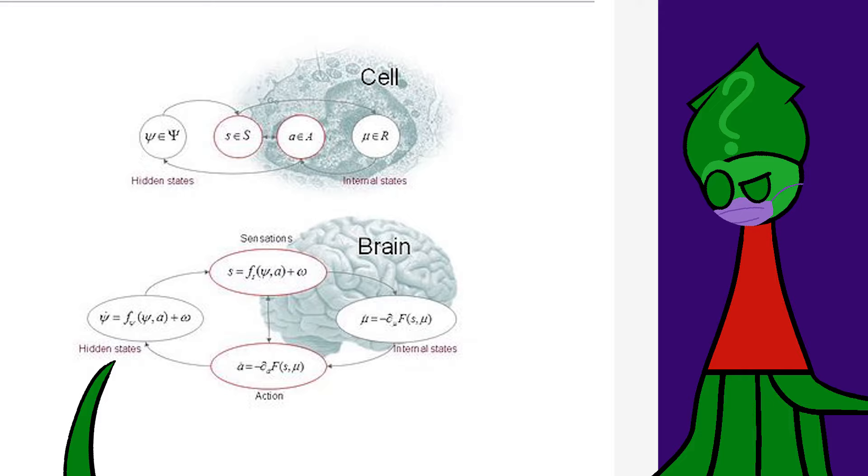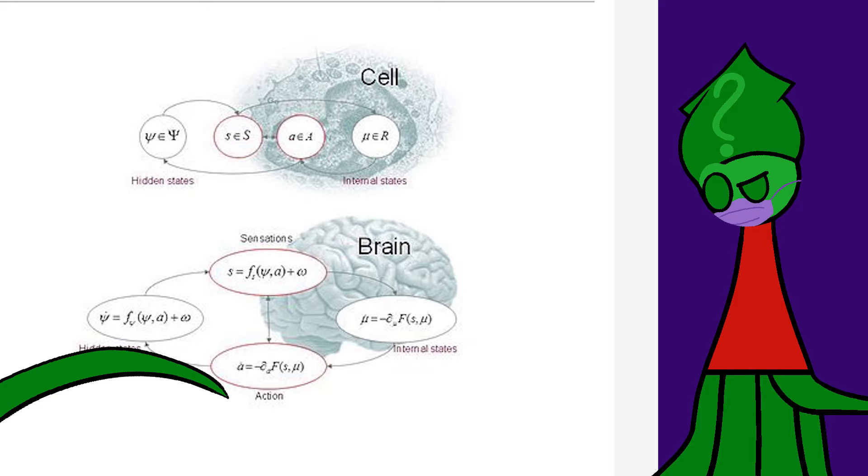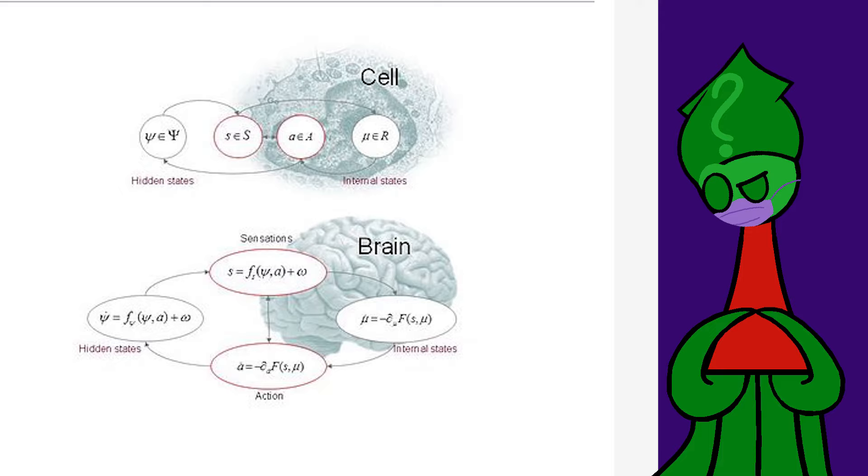Brains don't get to know everything going on out there, but they do get sensations. And brains don't get to touch everything going on out there, but they can take actions. Internal states and external states don't directly interact, but they do interact.